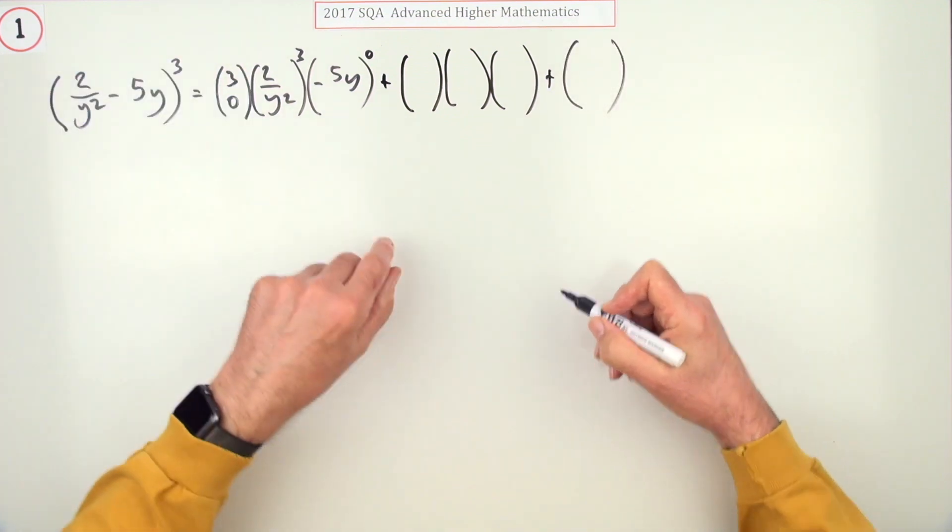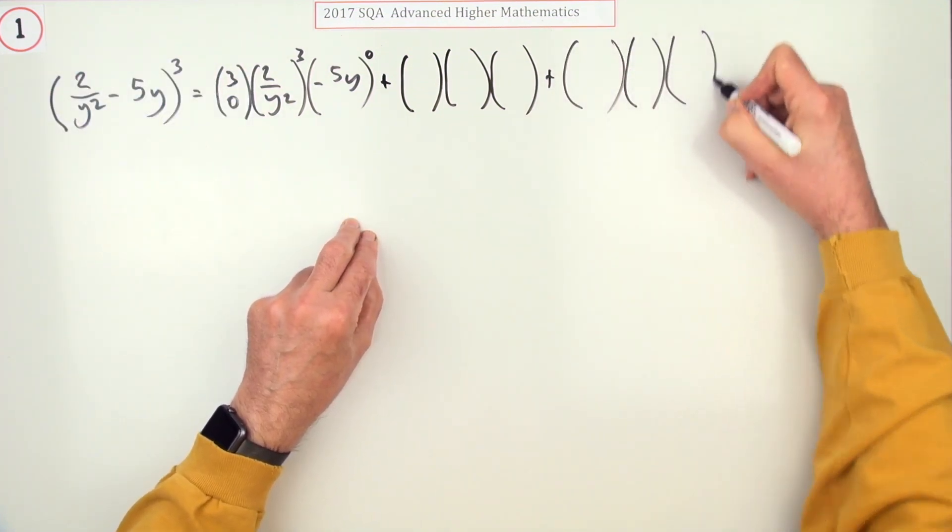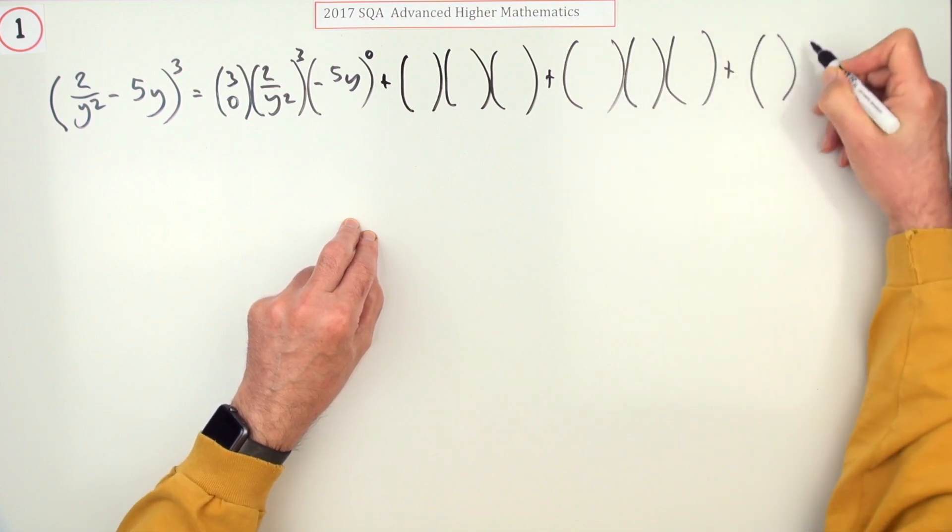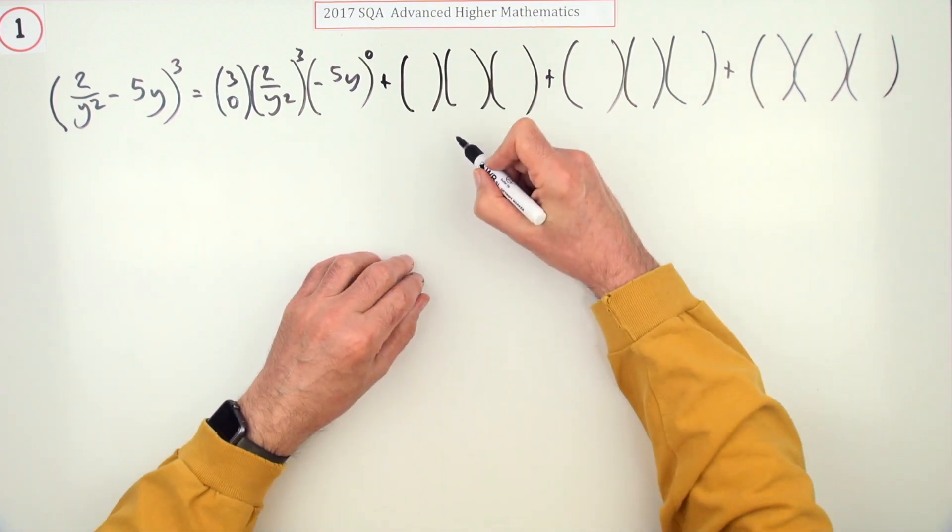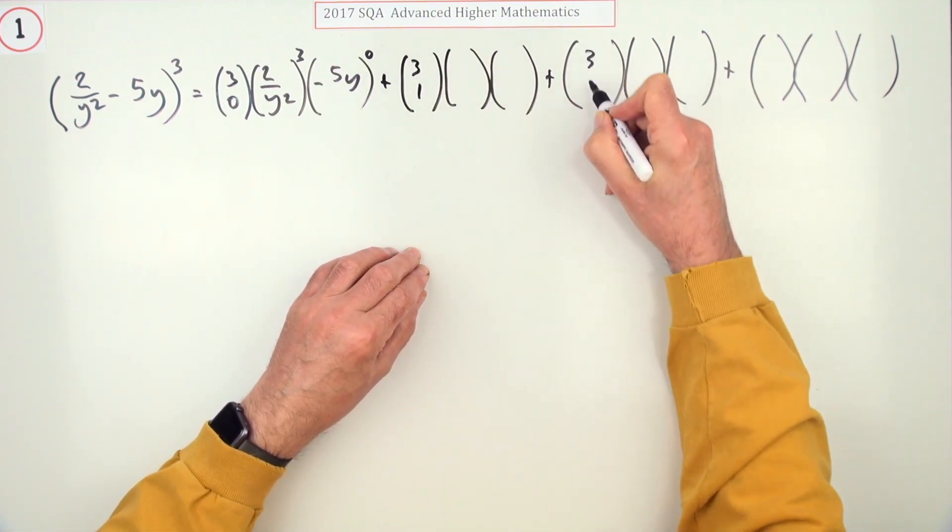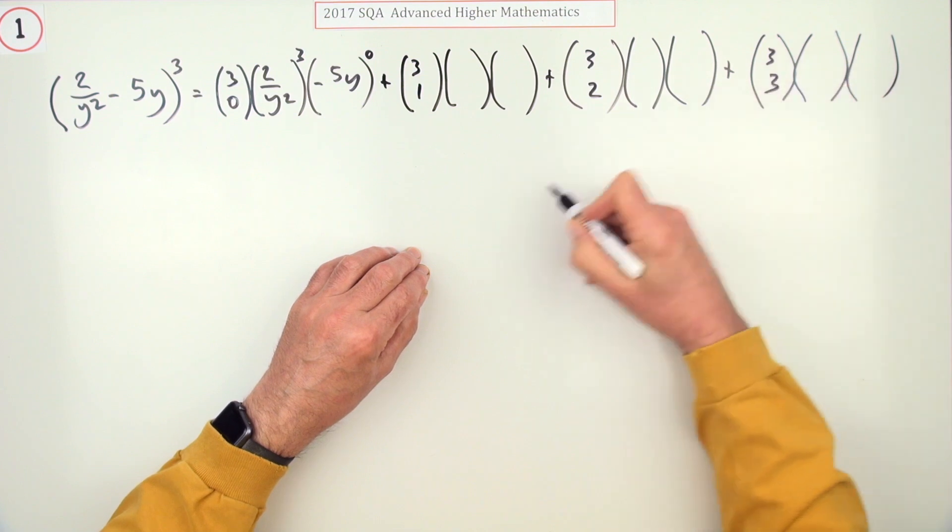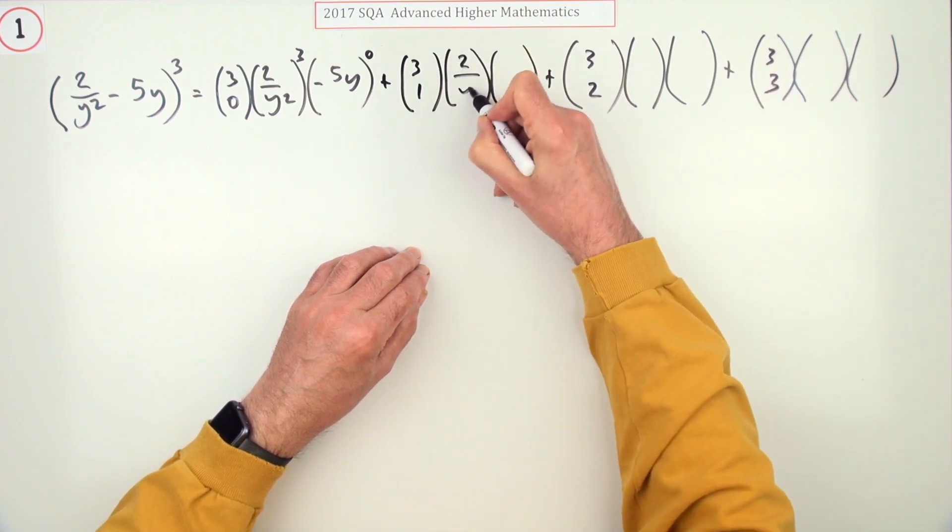Power three means it'll only be four terms. Used up too much room for that one, too little for that one—probably panicking thinking I'm not getting them all in. That's all the space you need. So that's (3,0), (3,1), (3,2), (3,3). All of these will have the 2 upon y².